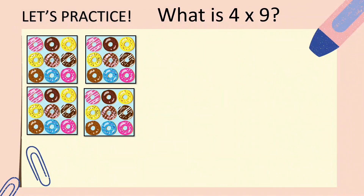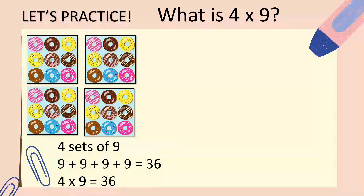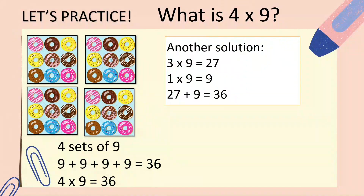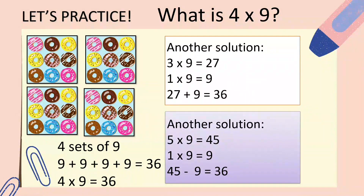Let's practice: what is 4 times 9? You can draw 4 sets of 9 donuts and add them up — that equals 36. Another solution: if you know 3 times 9 is 27 and 1 times 9 is 9, add the products: 27 plus 9 equals 36. Or use subtraction: 5 times 9 is 45, and 1 times 9 is 9, so 45 minus 9 equals 36.